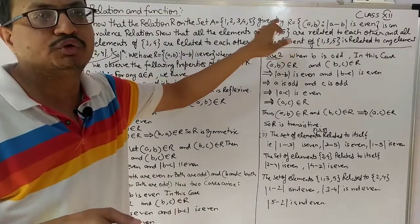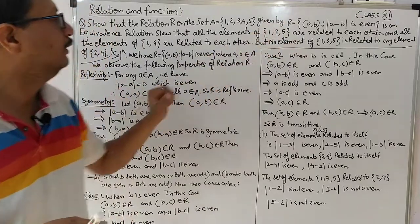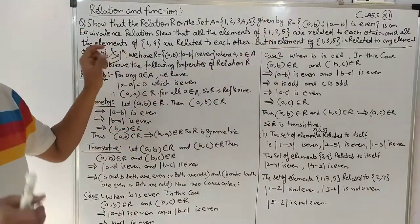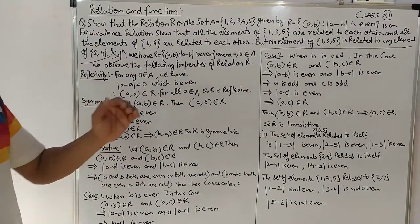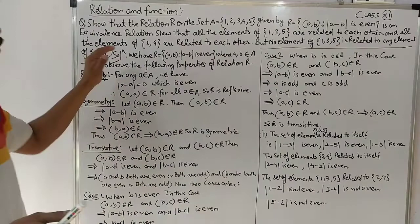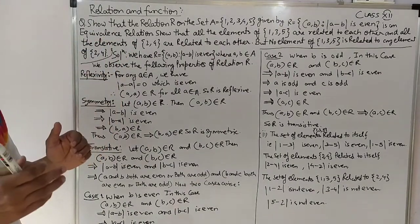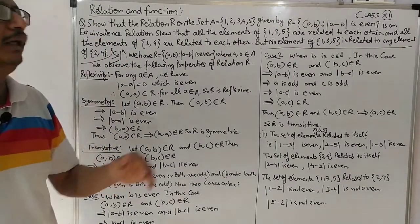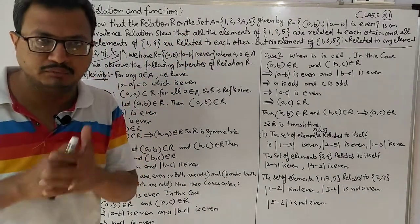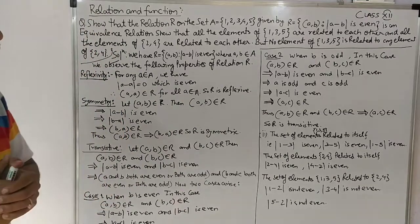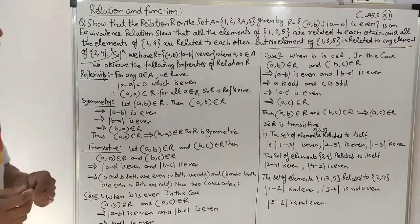इस बार {1, 3, 5} को {2, 4} से आपको relate करना है और बताना है कि क्या ये relation satisfy हो रहा है या नहीं। तो बहुत ध्यान से हमें इस question को करना है।